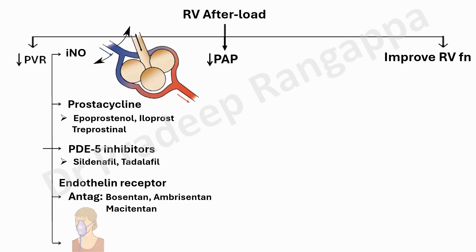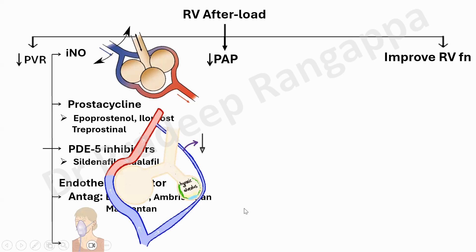When there is a diseased, hypoxic alveolus, vasoconstriction occurs, and oxygen at least mitigates or alleviates the severity of that vasoconstriction. Hypoxic pulmonary vasoconstriction is an important entity to mitigate. Anyone with an RV problem should not be hypoxemic, because hypoxemia perpetuates vasoconstriction and leads to increased pulmonary vascular resistance.